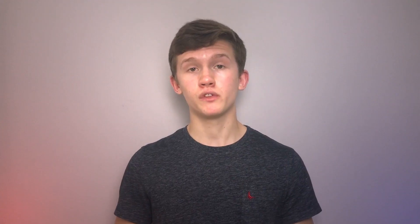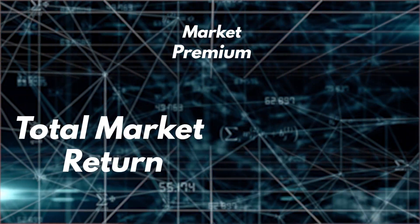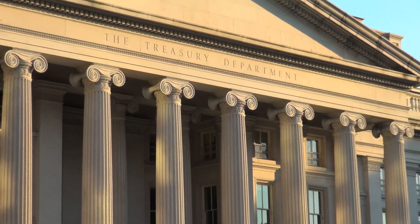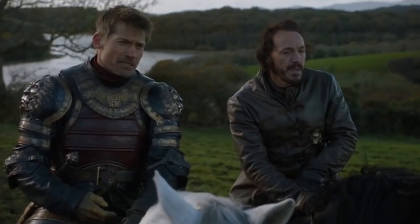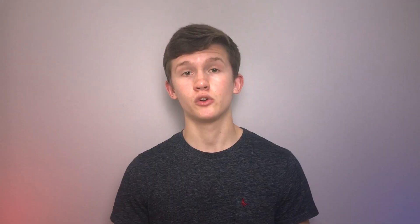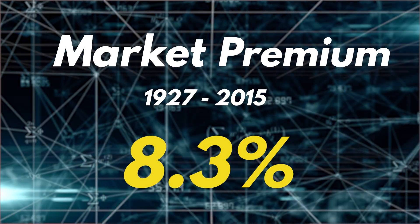Stocks carry risk due to their volatility, but how do we calculate how much risk we're taking on and how much we should be rewarded? This is called the market premium. To calculate it we need to compare the return of the market to the return of a riskless asset. No asset is truly riskless but the closest thing we have are one month US Treasury bills. The T-bills are thought to be a riskless asset due to their short duration and their backing by the US government. To calculate the market premium we take the average return of a stock market and subtract the average return of one month T-bills. The historical data shows that in the US the market premium has returned 8.3% from 1927 through to 2015.